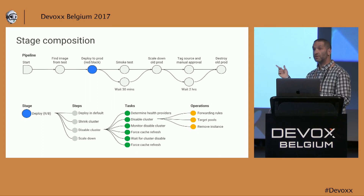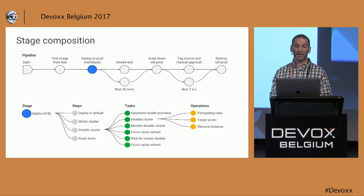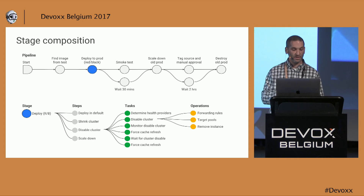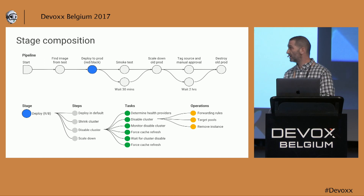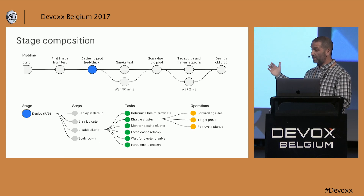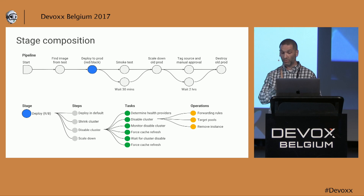Looking at one stage: the notion of deploying seems fairly straightforward, but these stages are composed of finer-grained steps. In the case of a deploy with the red-black strategy configured, it breaks down to a deployment step, a shrink cluster step, a disable step, and a scale down step.